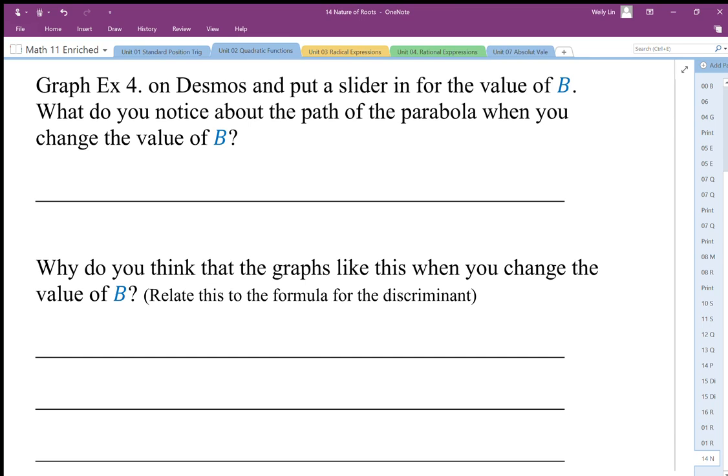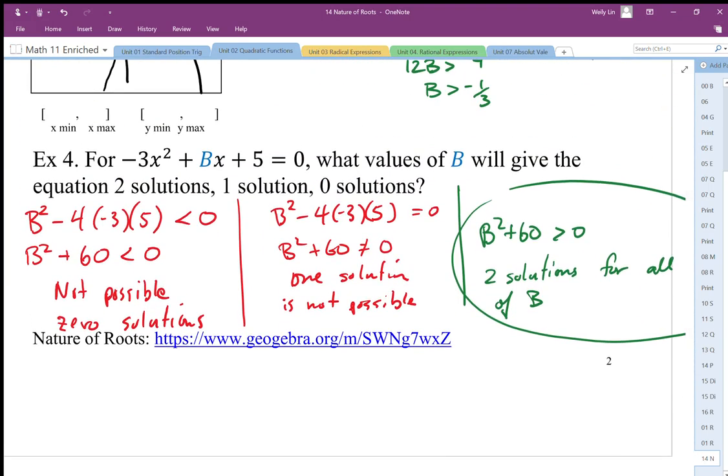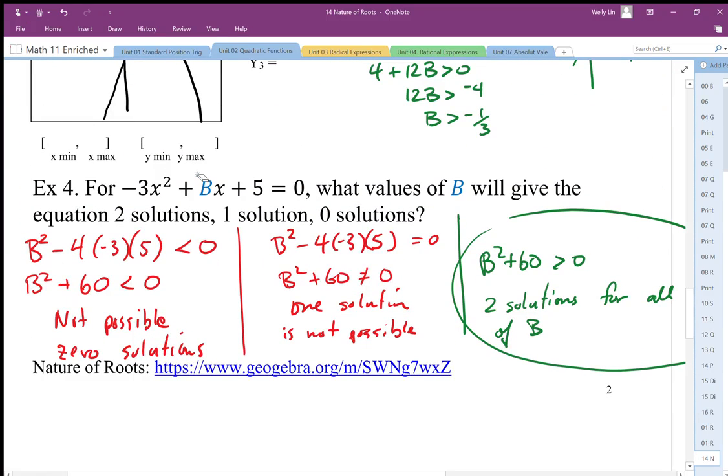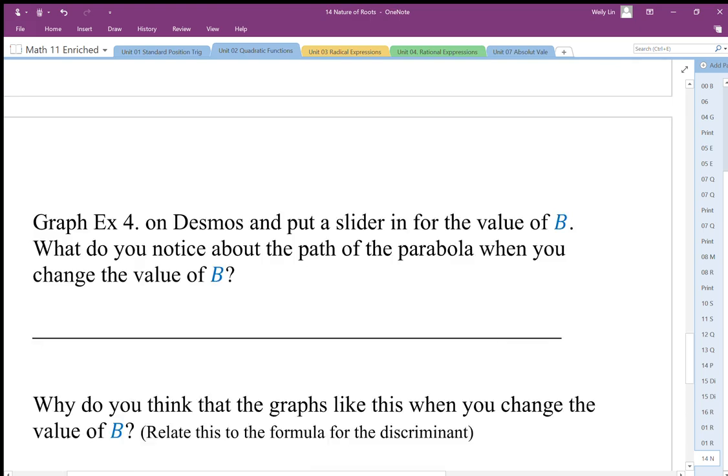In the animation, we put a slider on example 4, so this one here. We put a slider for B, the B value here, and we change that B value. So as you moved it around, the parabola moved around.